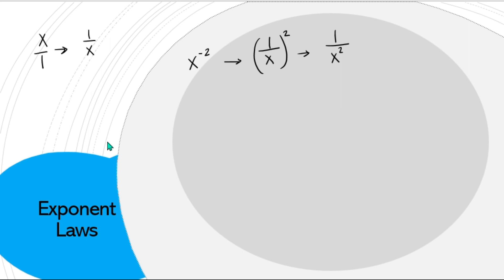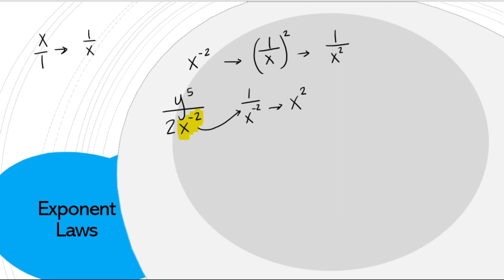Be very careful what gets to flip and what doesn't. If I had y⁵ over 2x to the negative 2 on the bottom, the negative exponent is only acting on that single x. The 2 is not in brackets, so it stays where it is. The y⁵ doesn't have a negative exponent, so it doesn't get to flip. This part — 1 over x to the negative 2 — inverted becomes x squared. So the entire fraction changes to x²y⁵ over 2.